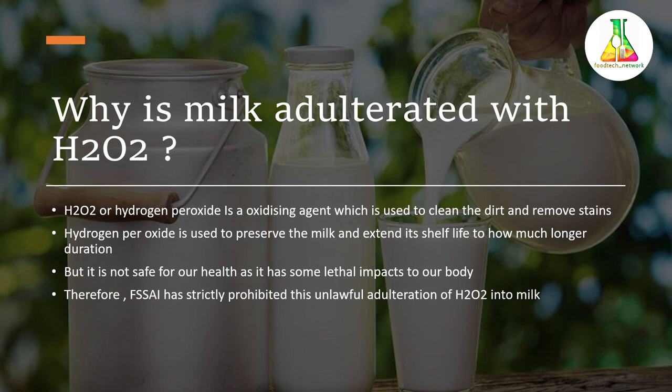So why do milkmen or other milk vendors adulterate milk with H₂O₂? First, you should know what H₂O₂ is. Hydrogen peroxide, or H₂O₂, is an oxidizing agent which is used to clean dirt and remove stains.